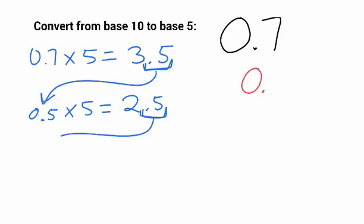Take that piece, move it to the next line, 0.5 times 5. And you can see that I'm going to end up with the exact same line. So this is going to repeat forever, repeating over and over. And so, if I look at the answer now, the answer...